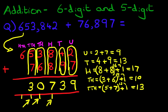And, lastly, we've got the hundred thousands. We've got six plus zero plus one. The answer is seven.